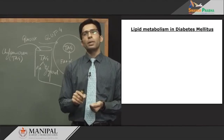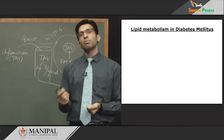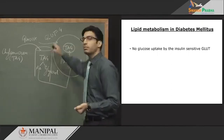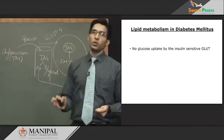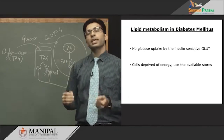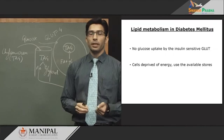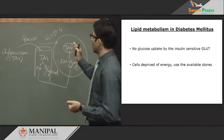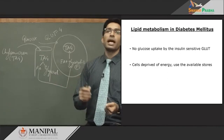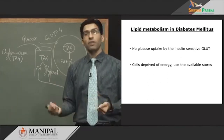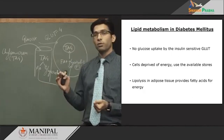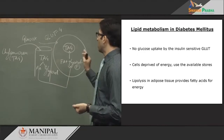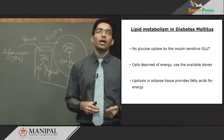In diabetes mellitus — whether insulin is reduced or absent — the enzymes responsible for maintaining metabolic pathways in the presence of insulin are affected. Glucose uptake by insulin-sensitive GLUT receptors does not occur, so insulin-dependent tissues are deprived of energy. These tissues then utilize available stores: the adipose tissue, which stores triacylglycerol, breaks it down to get energy through lipolysis, releasing fatty acids that go to the liver for beta-oxidation.